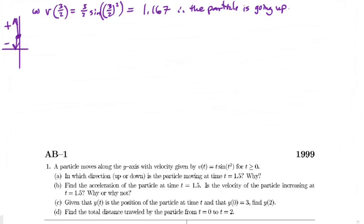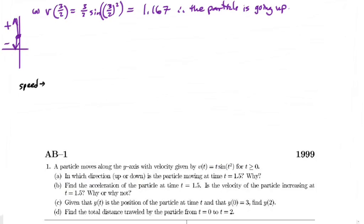Let's look at part B. Find the acceleration of the particle at time t equals 1.5. Is the velocity of the particle increasing at t equals 1.5? Here's an overarching concept: if you take the derivative of velocity, you get acceleration. If you take the anti-derivative of velocity, you get position or distance.